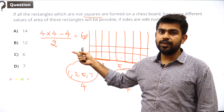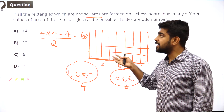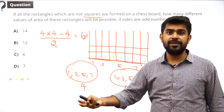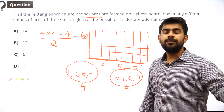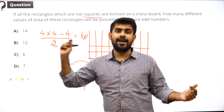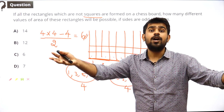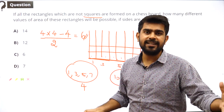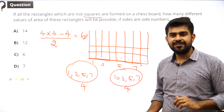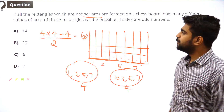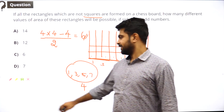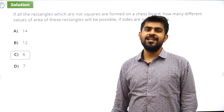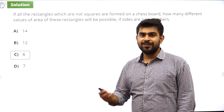3×5 and 5×3 are two different rectangles, but their area is the same. Since I am looking at distinct values of area, repeated pairs must be removed. Dividing by 2 gives the correct answer of 6. If you have any doubts, please comment them down.